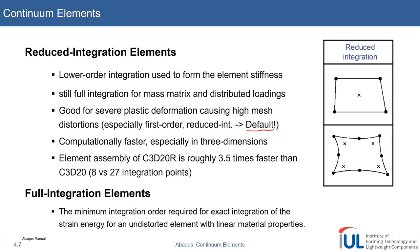In general, the element stiffness is computed using only the reduced number of integration points. However, the mass matrix and loadings distributed over the elements are still calculated using the full number. Using the reduced number of integration points can save you quite a lot of time, because the element stiffness is often the most expensive to build.